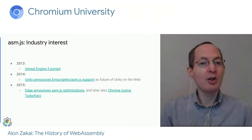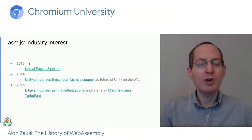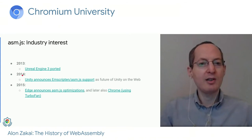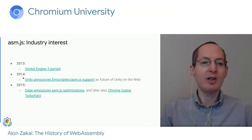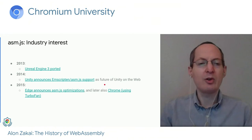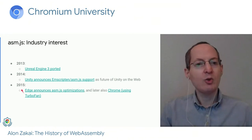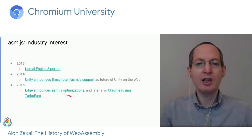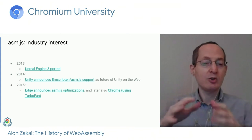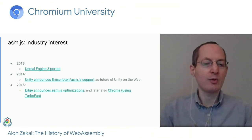Despite the downsides, asm.js worked pretty well and worked in all browsers, attracting a bunch of industry interest. Unreal Engine ported to it. In 2014, Unity — the other very important game engine that had previously ported to NaCl — ported to asm.js and announced this as their focus for Unity on the web. And in 2015, Edge and Chrome announced they were going to do asm.js-style optimizations, showing that this approach Firefox started was useful for them too.